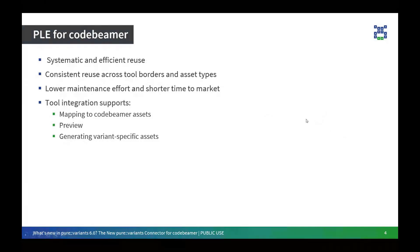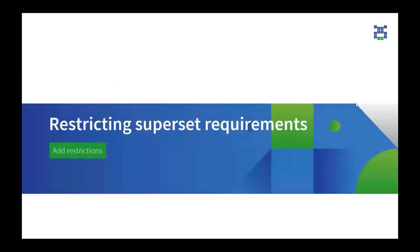Our tool integration supports mapping to CodeBeamer assets, a preview of what your variant-specific asset will look like, and last but not least, generating the variant-specific asset. Now, I will first show you how we actually restrict our superset requirements.